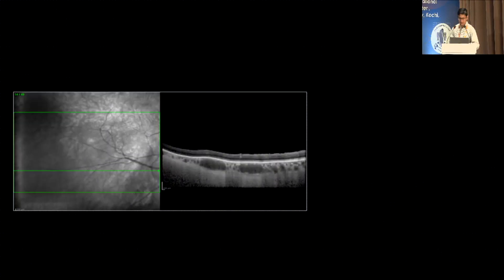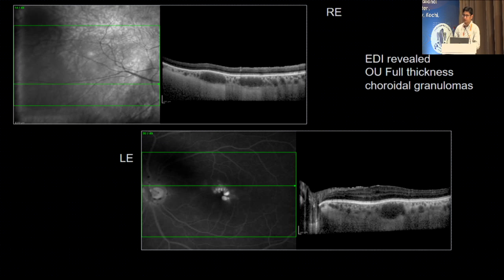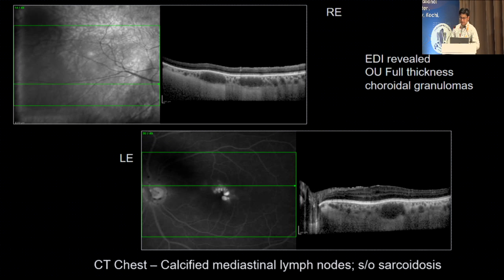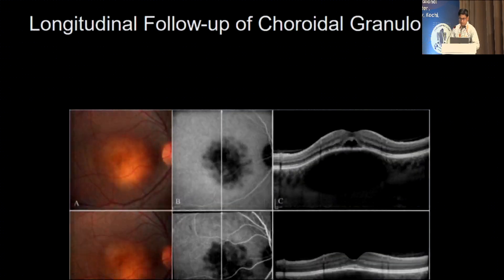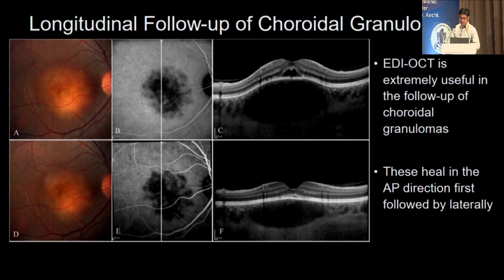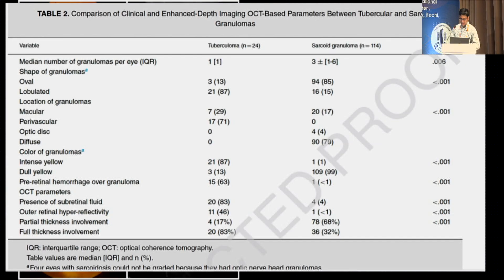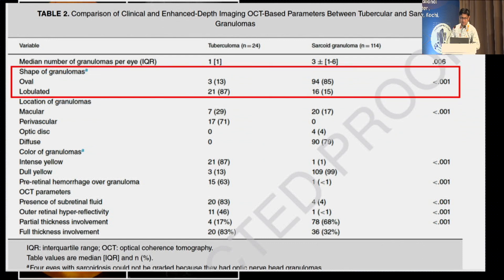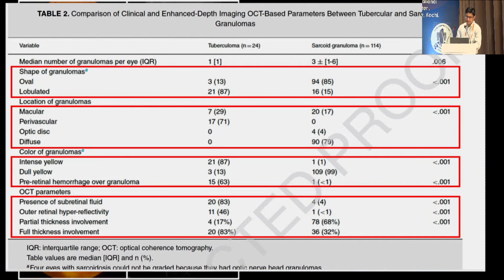EDI-OCT is very useful in following up choroidal granulomas. A patient with calcified lymph nodes shows a choroidal granuloma that is well-behaved — present in the choroid without causing much elevation, minimal fluid. A patient with sarcoidosis shows that with treatment there is a decrease in the anteroposterior extent of the lesion. Multiple differences between TB and sarcoid choroidal granulomas include shape, location, and color — color is quite suggestive. Other OCT parameters include fluid, neovascularization, and choroid thickness. Sarcoid granulomas are usually partial thickness whereas TB granulomas are usually full thickness.